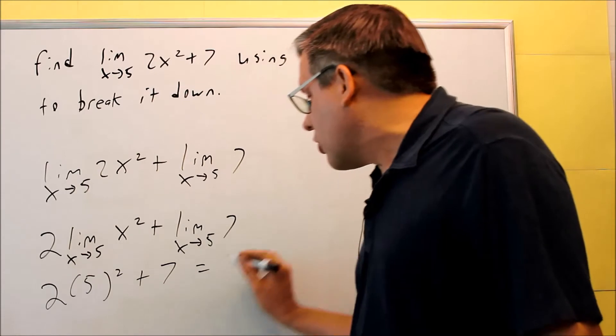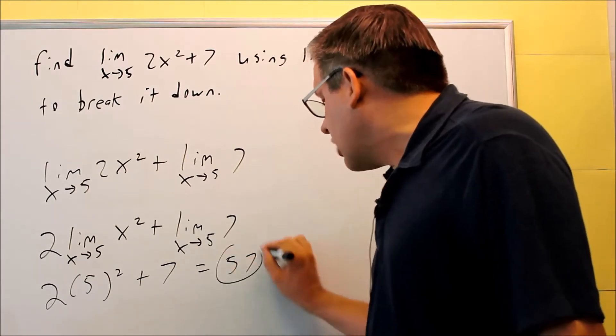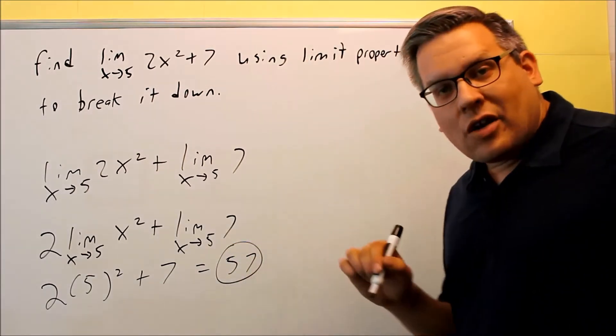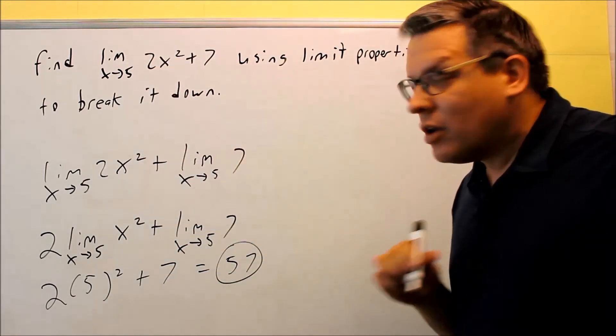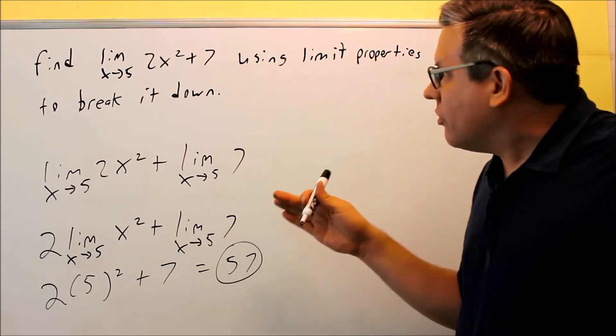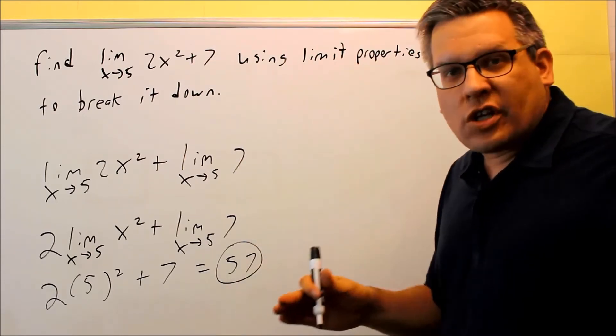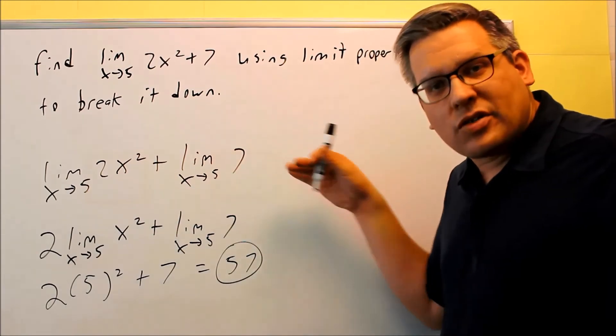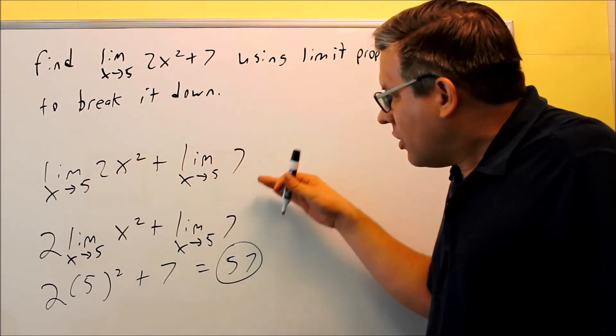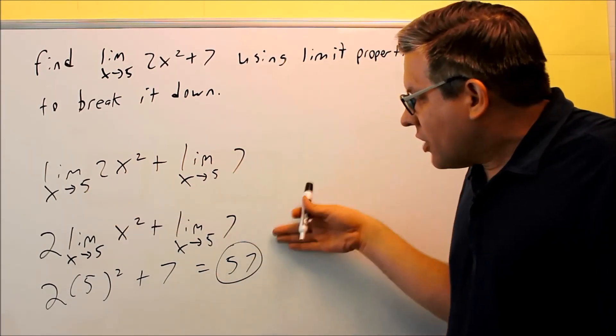You'll get 50 for the first one plus the 7. So the limit's going to be 57. So yes, we could have just done that from the very beginning and plugged 5 into that and gotten the answer. However, if the question asks you to find the limit using limit properties, that means you have to actually show this step by step and break it down using all the properties to get the answer.